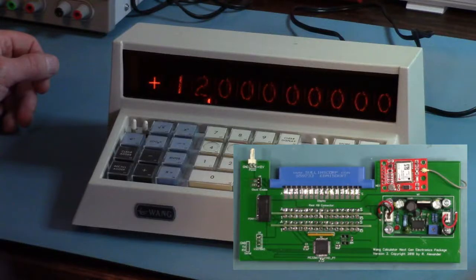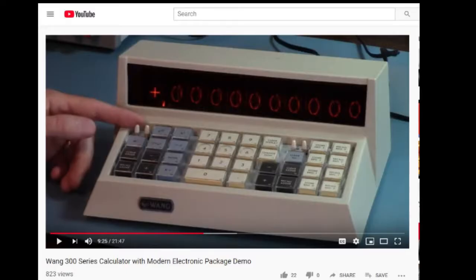Hi, if you have a modern electronic package board for the Wang 300 calculator, I want to give you some extra information about how to adjust the Nixie tube brightness, replace the key labels, and replace the key switches. I also have a couple of tips about installing the board. This is the second video I've made about the modern electronic package. If you haven't seen the previous one yet, you should watch it first.